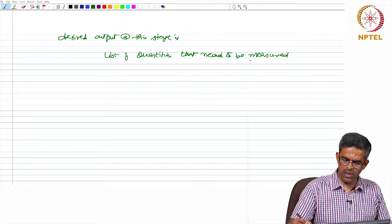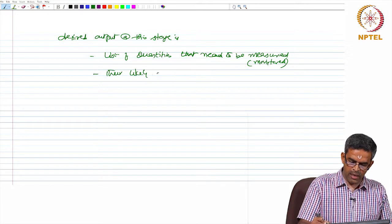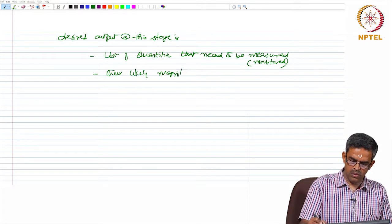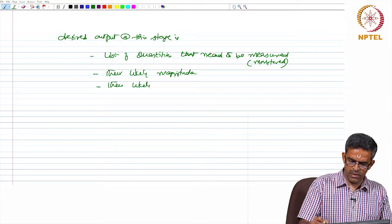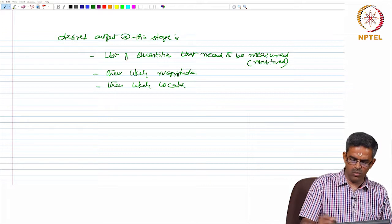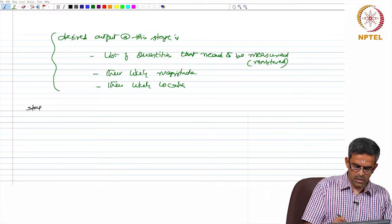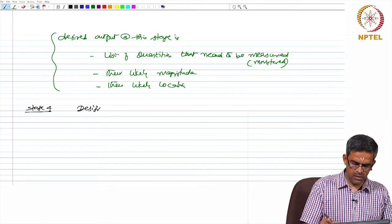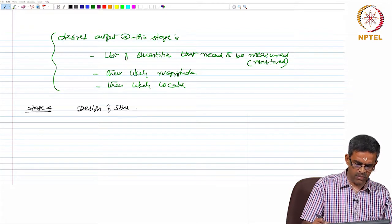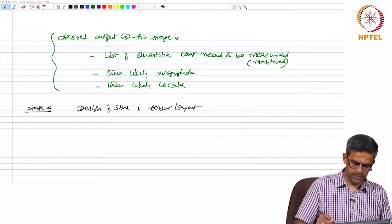In fact, I should say to be monitored. The likely magnitude and their likely location all should be known at this stage. So, next is stage 4, which is dealing with design of SHM and sensor layout.